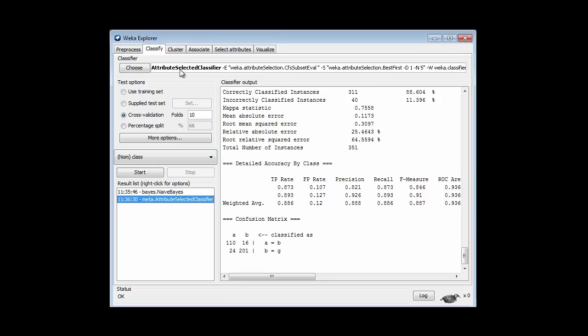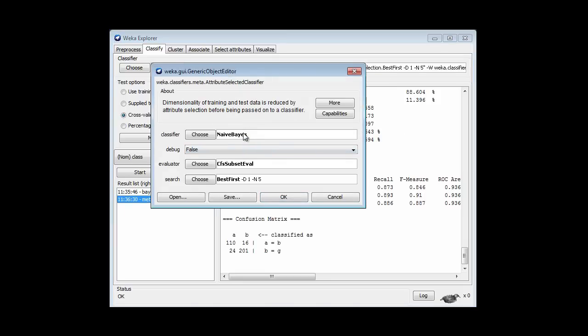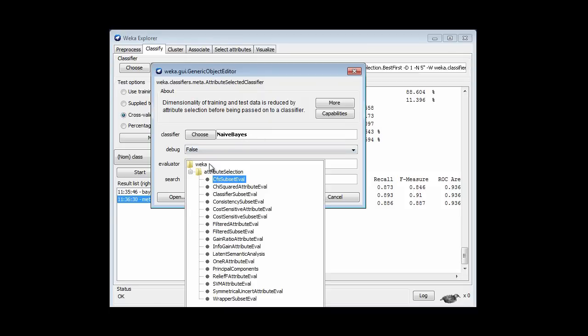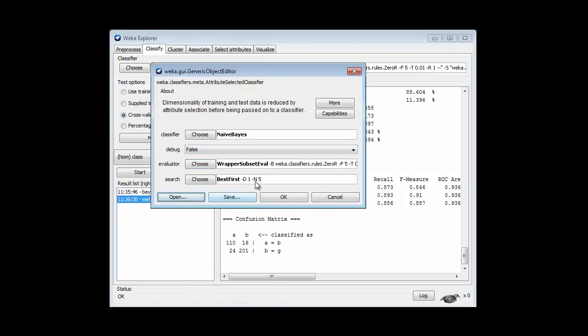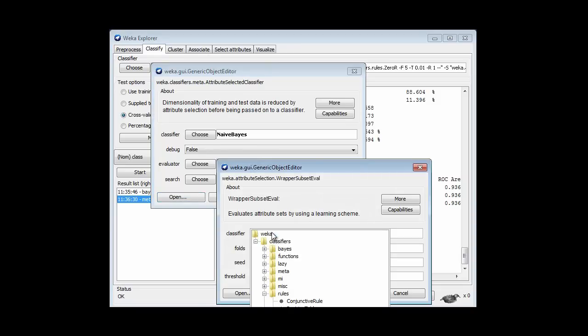Let's try Attribute Selection using the wrapper method. I'm going to use the same learning scheme, Naive Bayes, but here I'm going to choose the wrapper method. For that, of course, I've got to specify a machine learning method to use to wrap, and we're going to wrap Naive Bayes.